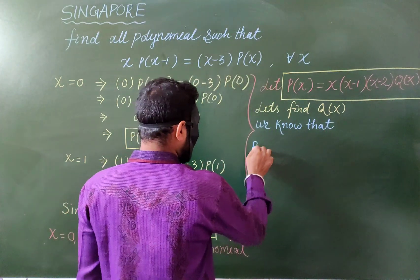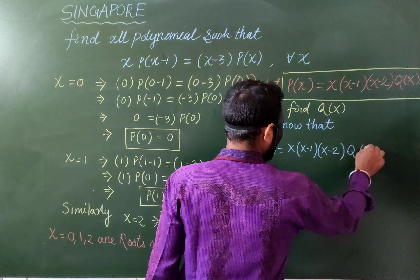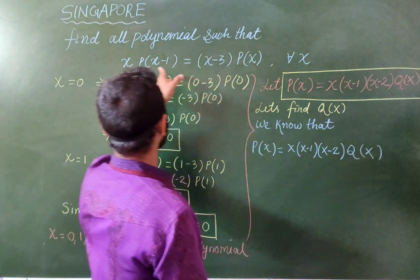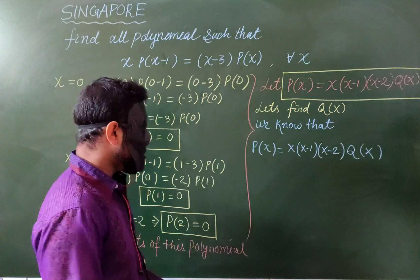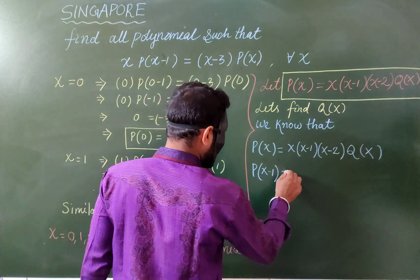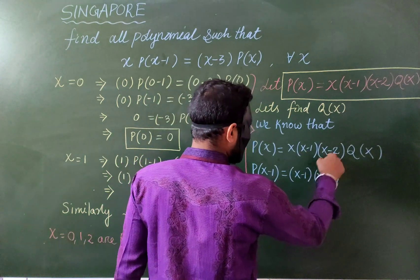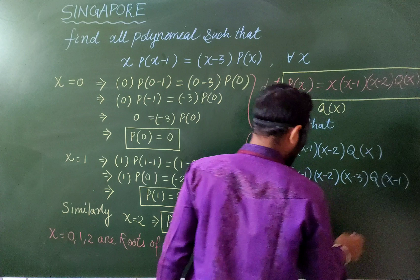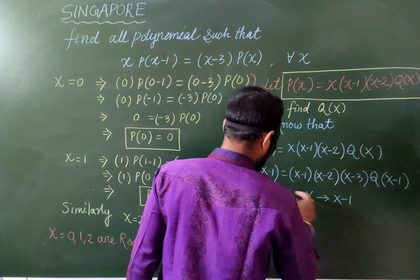So p(x) equals x times (x minus 1) times (x minus 2) times q(x). We can substitute this into the original equation. We also need p(x minus 1): substituting x with (x minus 1) gives (x minus 1) times (x minus 2) times (x minus 3) times q(x minus 1).